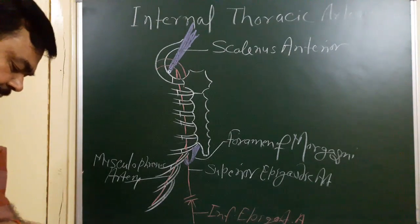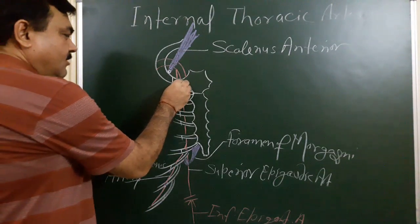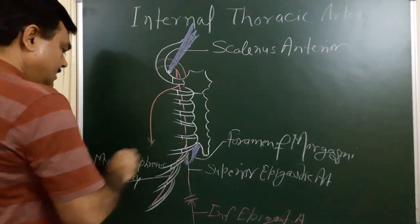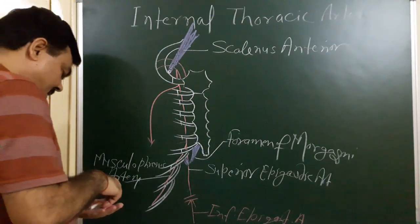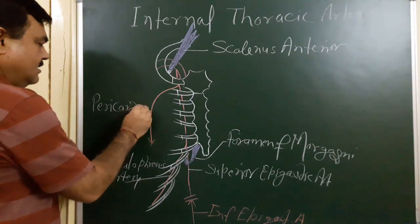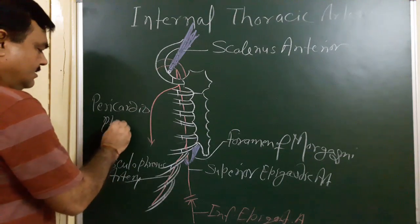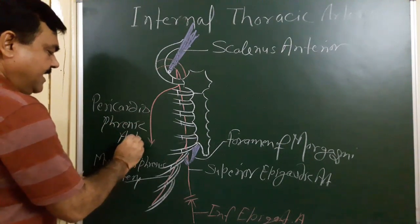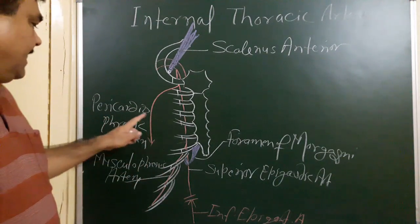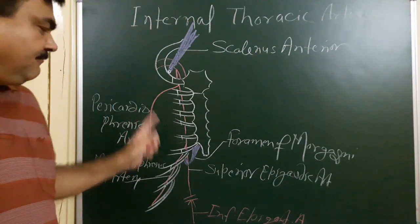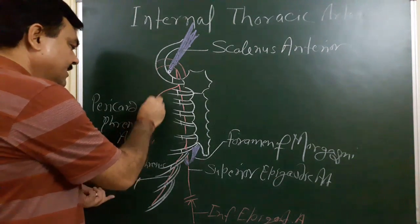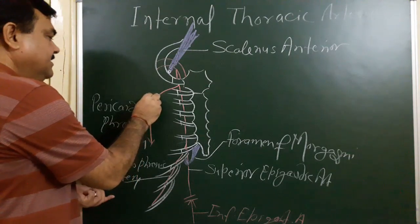Here, one branch arises in the upper part, known as the pericardiacophrenic artery. This is the pericardium — this branch gives supply to the pericardium and the mediastinal structures. This artery is accompanied by the phrenic nerve; it passes along with the phrenic nerve.